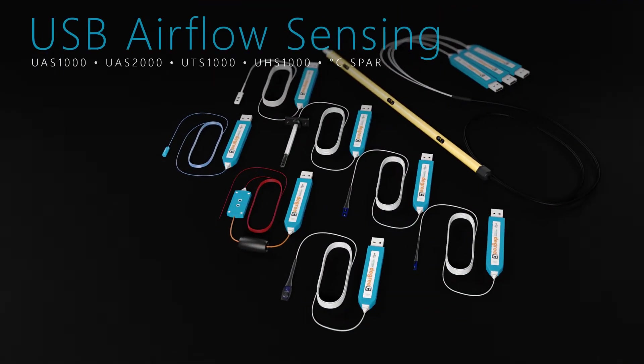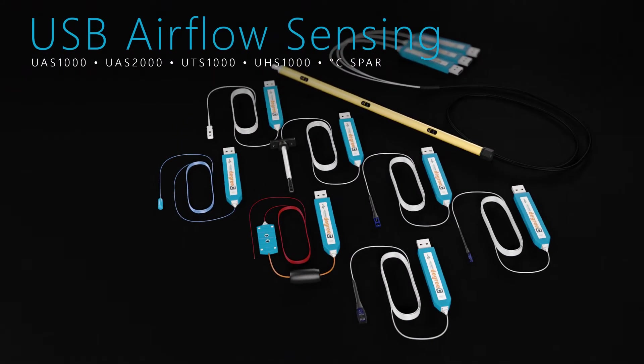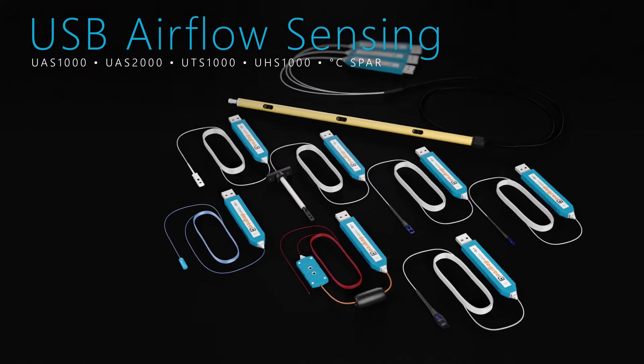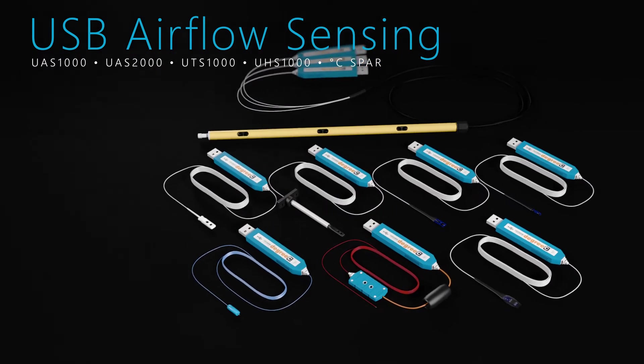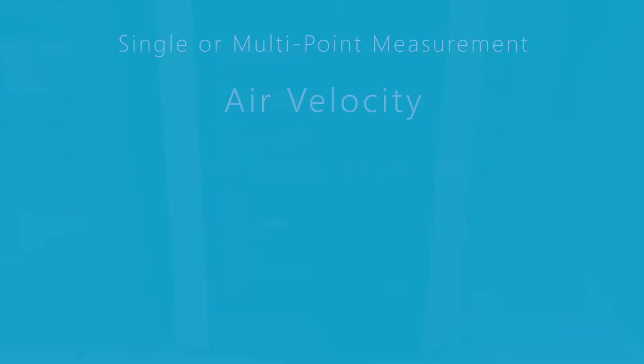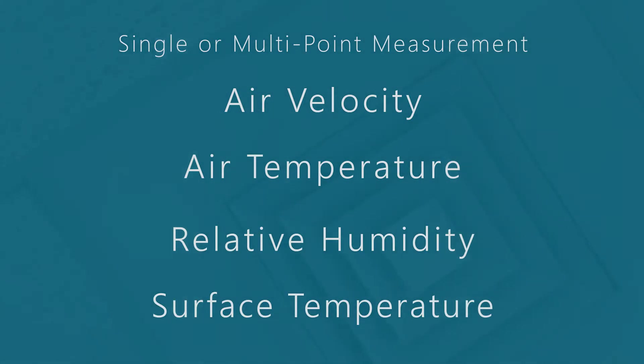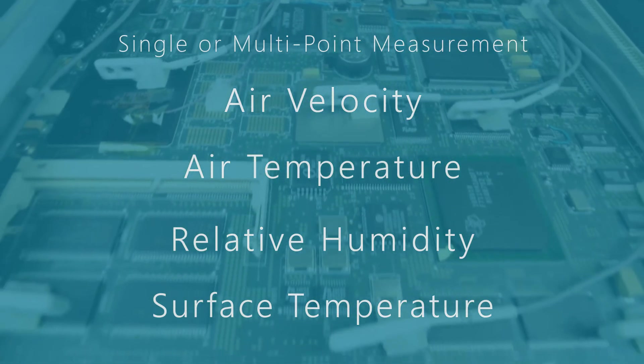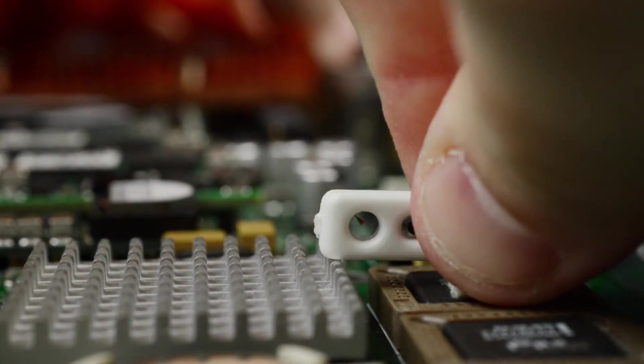Leveraging the convenience of USB interface, Degree C instrumentation class sensors can plug into any Windows-based PC to precisely log air velocity, humidity, and air temperatures in real-time with exceptional experimental repeatability and accuracy.